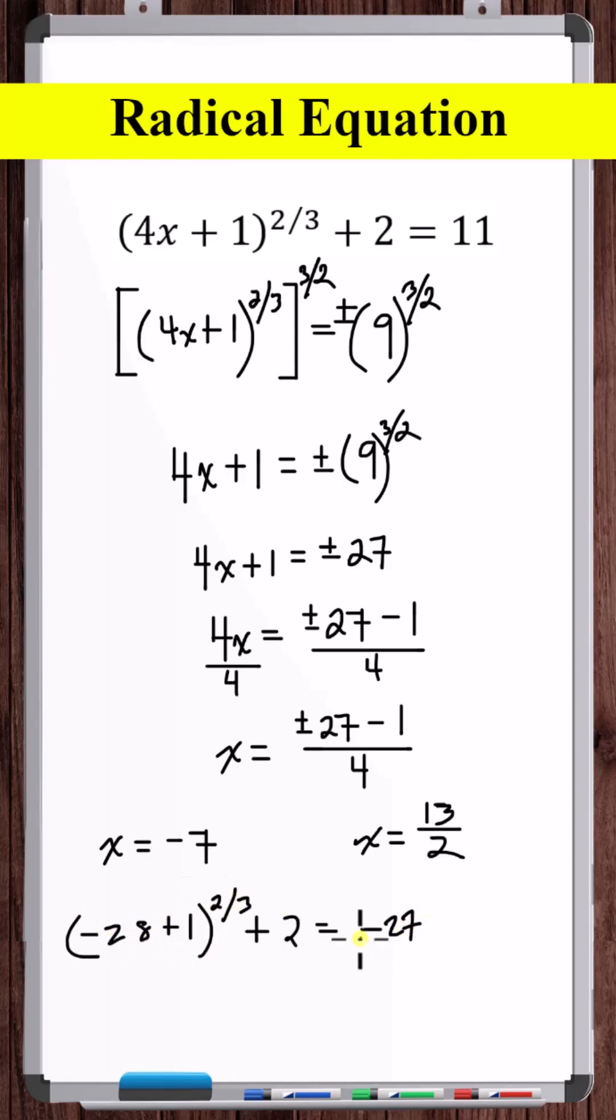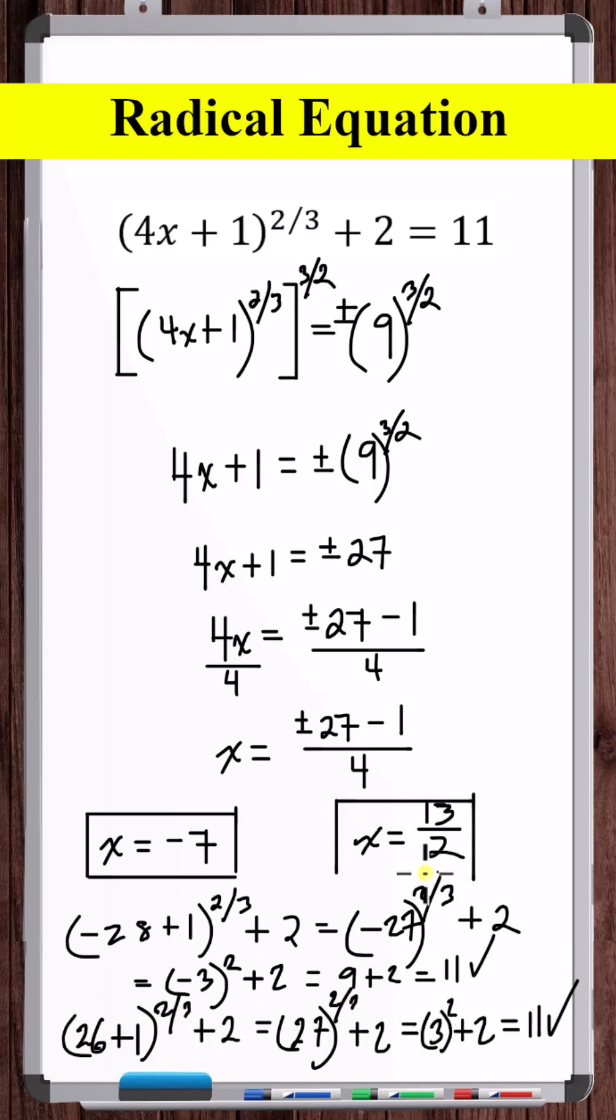So checking minus 7. Minus 7 is a solution. Checking 13 halves. So 13 halves is also a solution.